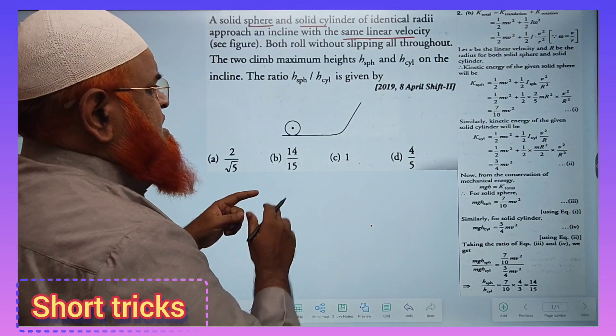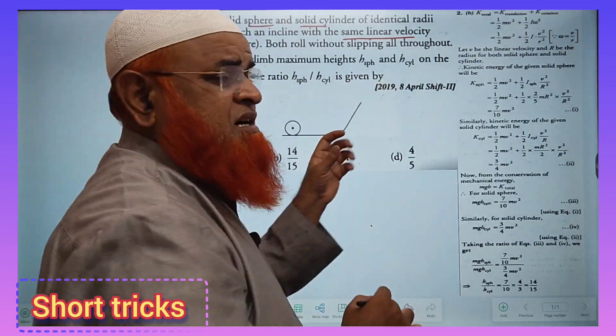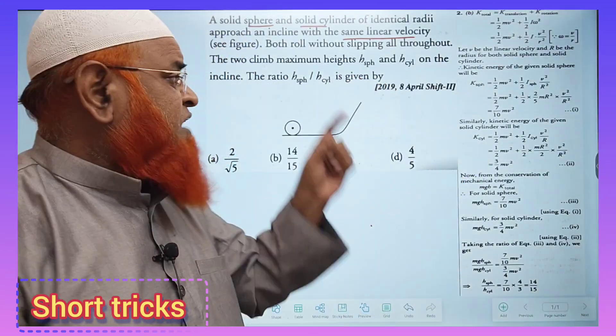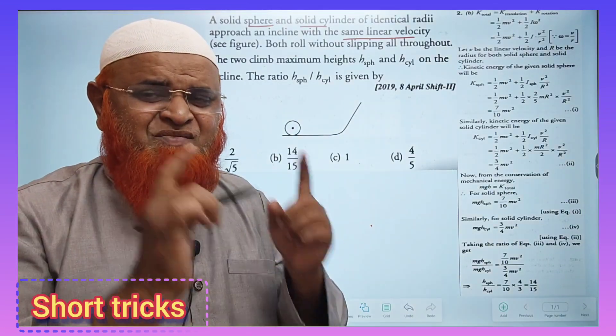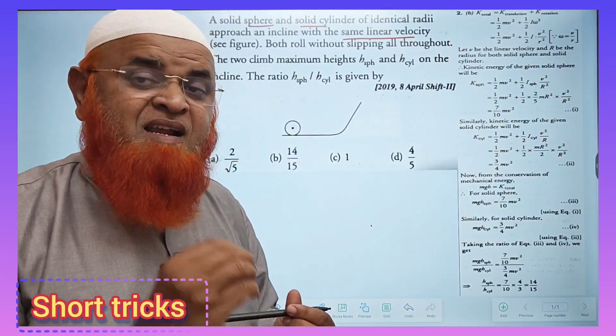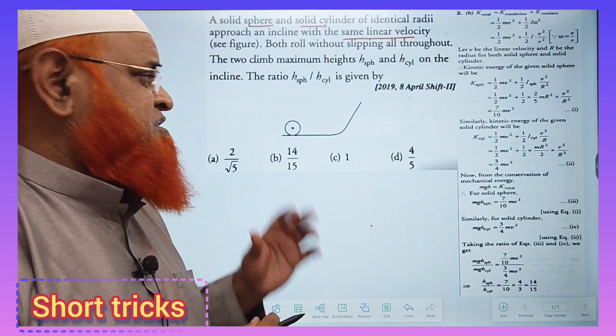Our question is: what is the ratio of the height reached by the sphere to the height reached by the cylinder? Let us see the method to solve this problem.